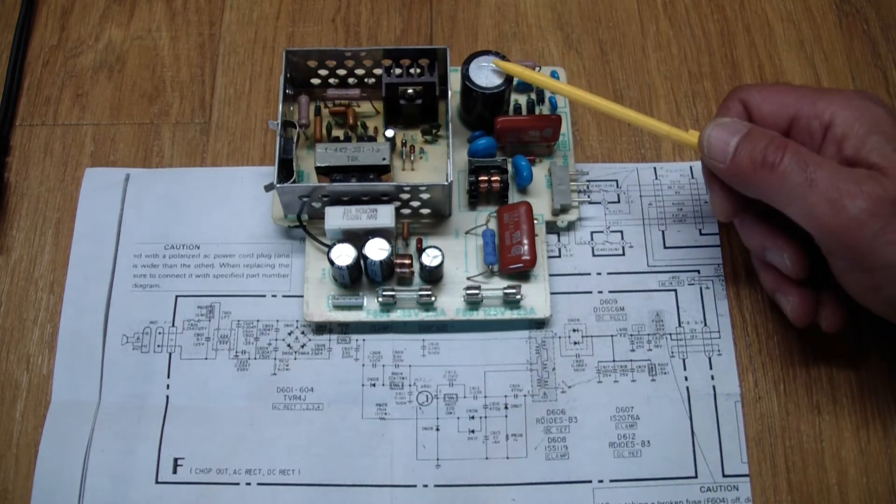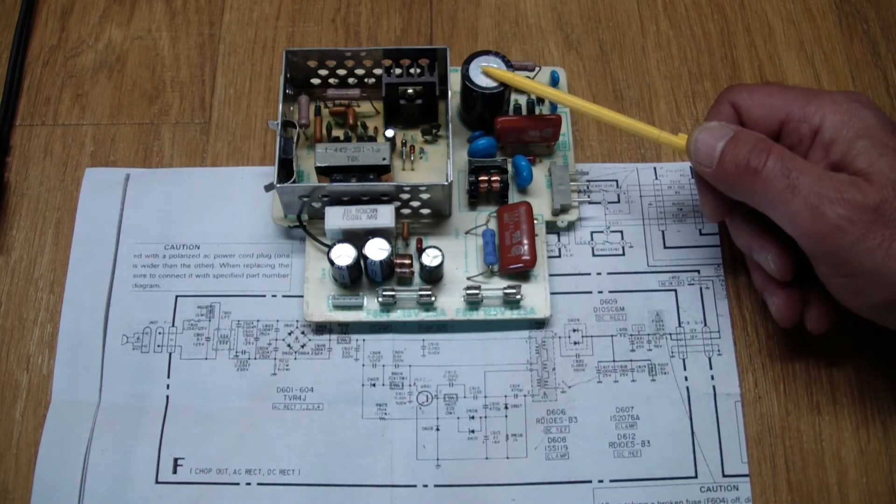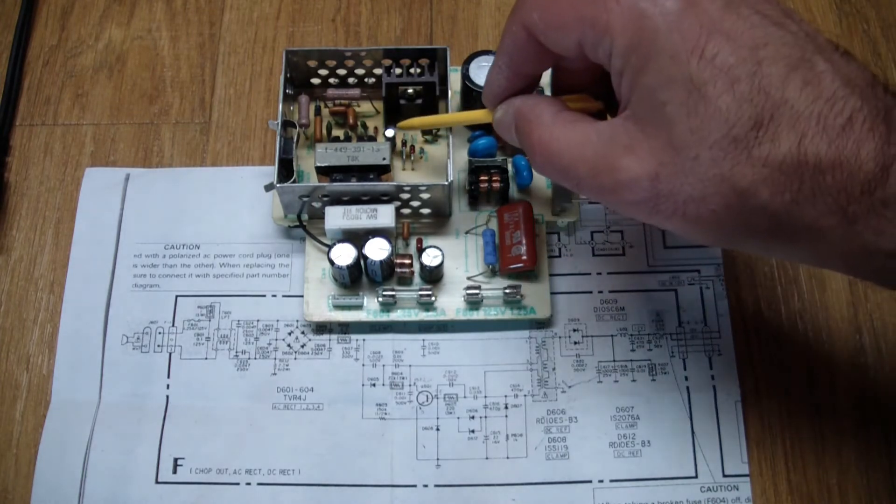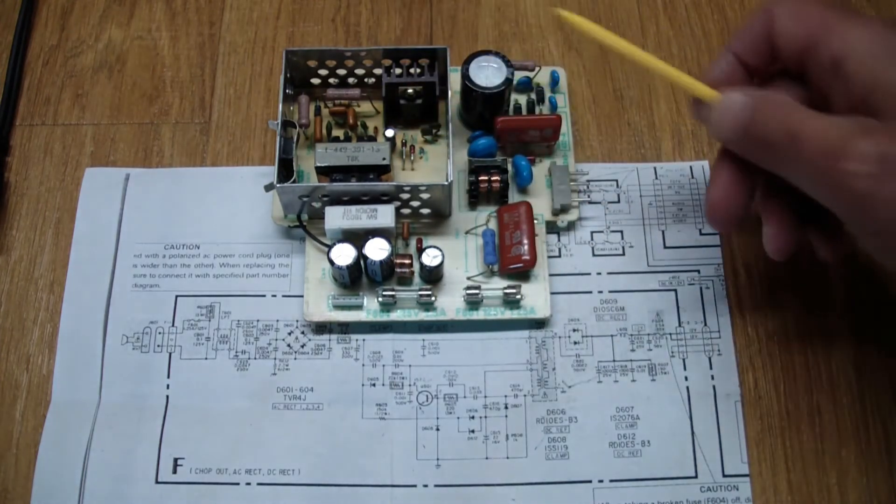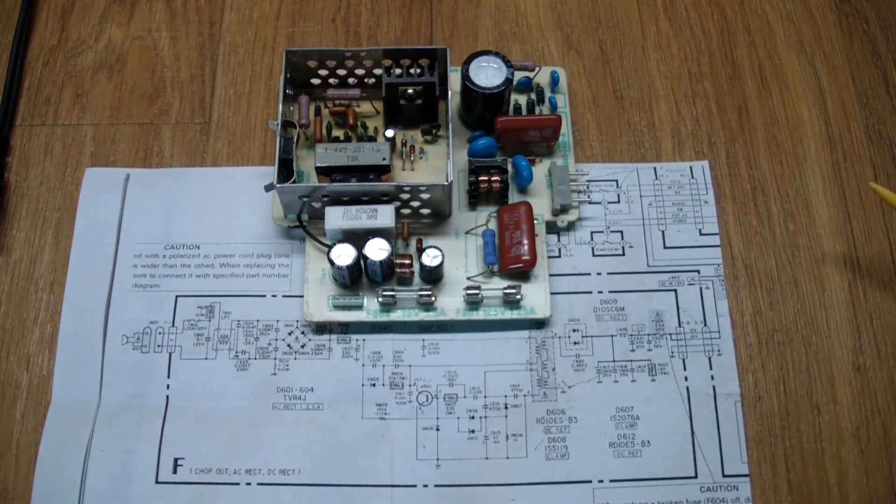We have the main capacitor sitting on the output right after the AC is rectified. We have this capacitor sitting in the PWM circuit, and then on the output side we have these smoothing capacitors, which all look good.